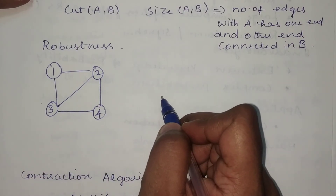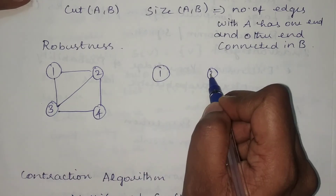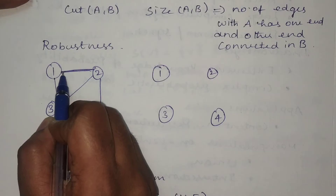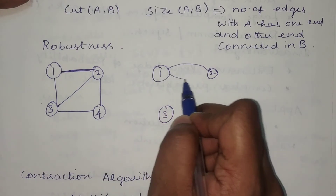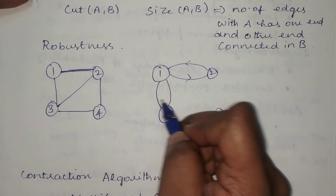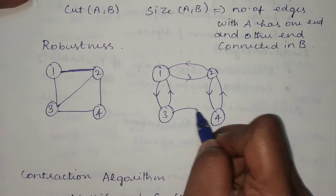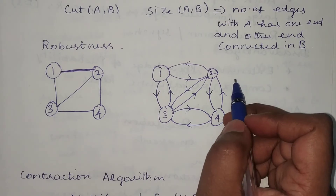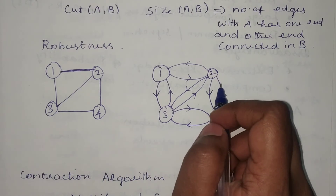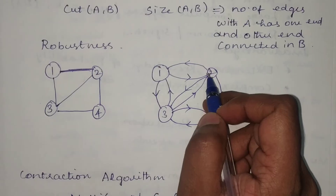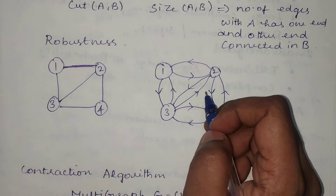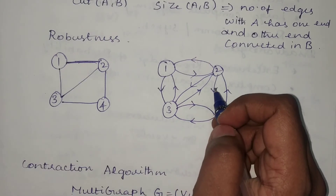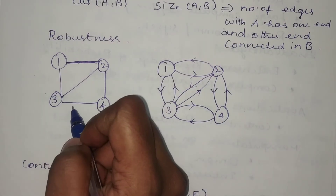In global min-cut we receive an undirected graph, but we need to convert it to a directed graph as the first step. We convert each undirected edge into a directed edge (both directions). When we do this conversion, the graph becomes a multigraph — meaning we can have more than one edge for the same pair of vertices.